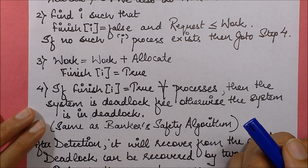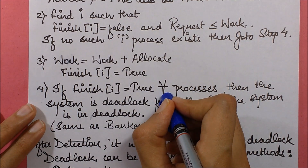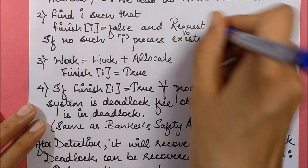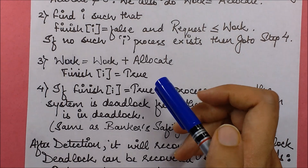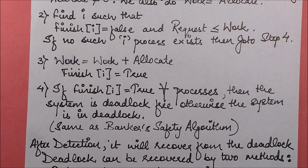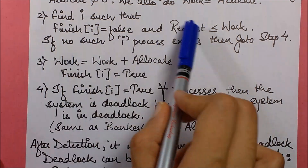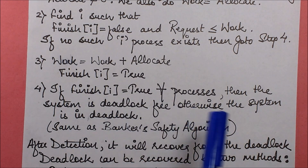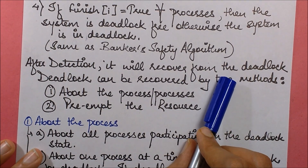Importantly, you keep on checking until finish[i] equals to true for all processes, or you reach step four. You keep repeating the steps for all processes. Once you have checked every process and reach step four, if all finish[i] values are not true, the system is in deadlock.